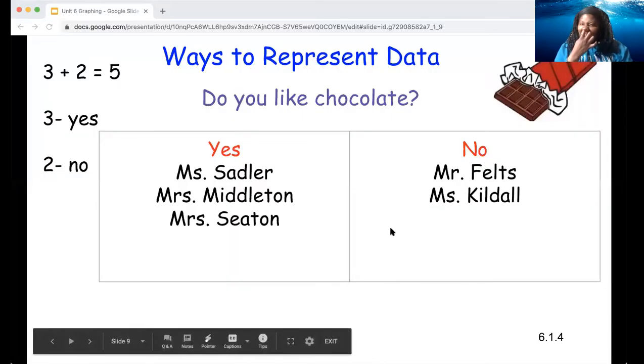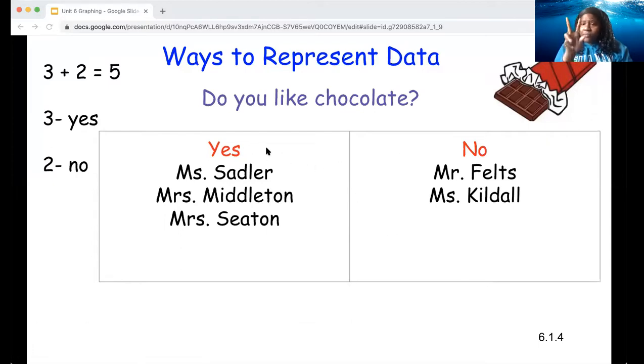So I simply asked, do you like chocolate? And here I started off with the chart, a column, two column chart. And I put yes and no. So you can see here that three teachers, yes, they do like chocolate. Myself, Mrs. Middleton and Mrs. Seaton. You look over here in the no column. Two teachers do not like chocolate. Mr. Feltz and Ms. Kildall. Notice my math equation is the three that like chocolate plus the two who do not like chocolate equals the five people that were surveyed in all.